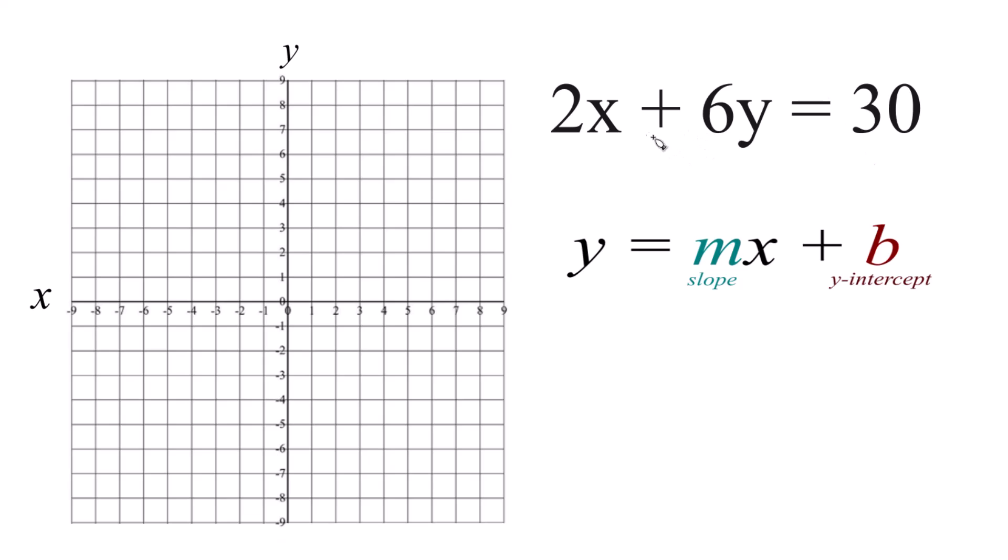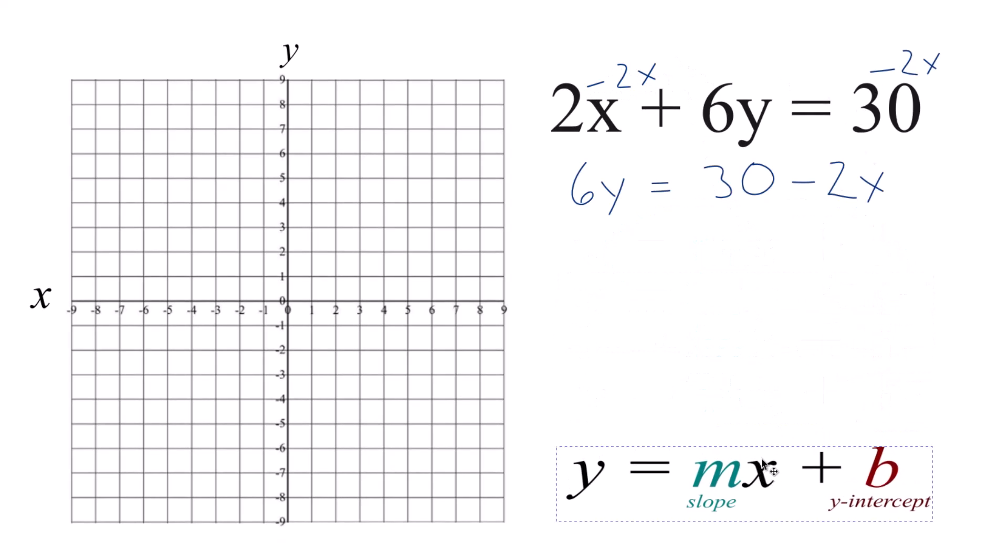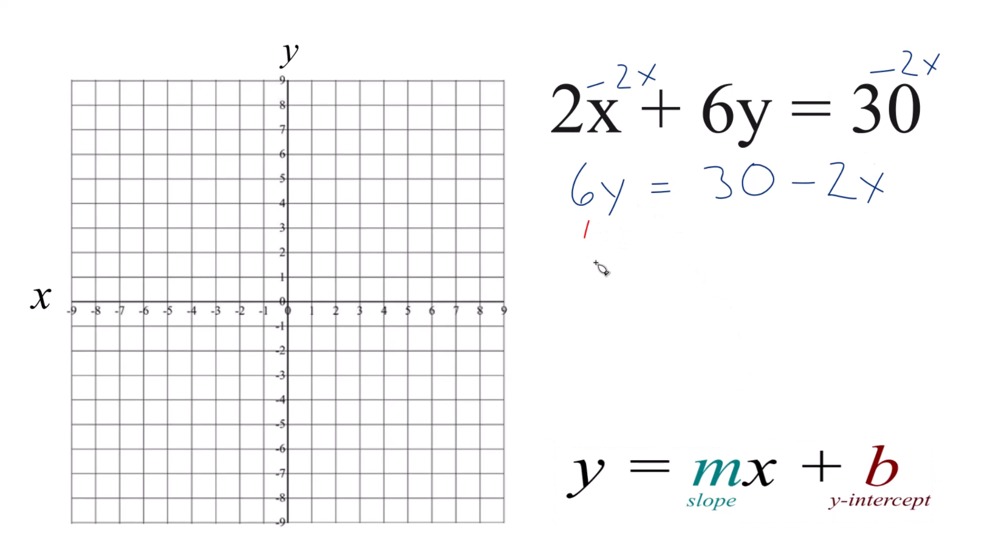What we need to do then is rearrange 2x plus 6y equals 30 into slope-intercept form here. So I'm going to subtract 2x from both sides. And then let's take and divide both sides by 6. That'll give us y all by itself.